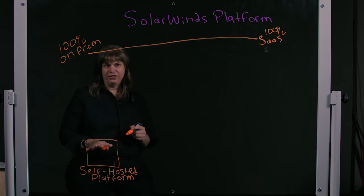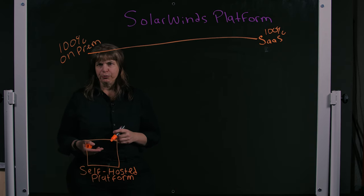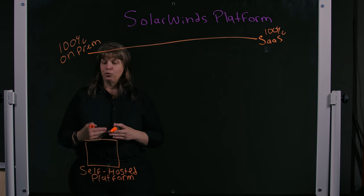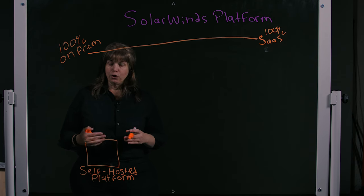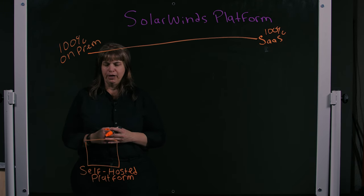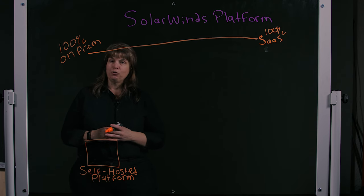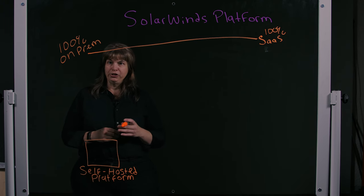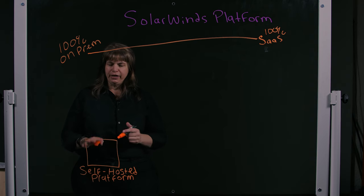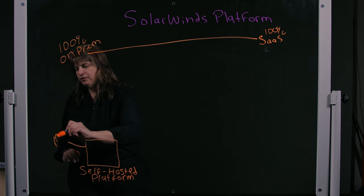The self-hosted platform has the same functionality as its predecessor, the Orion platform. If you are running versions 2020.2.6 or earlier, you are running the Orion platform and it runs the modules. The self-hosted platform is version 2022.3 and forward, and whichever one you're running, you can still run your module-based installs.